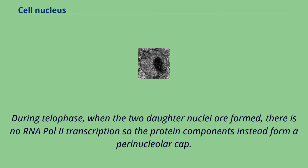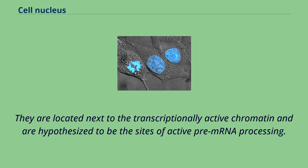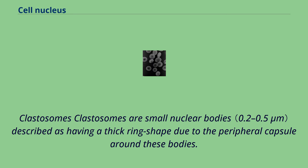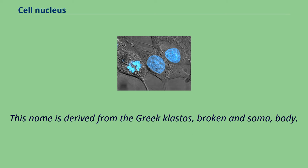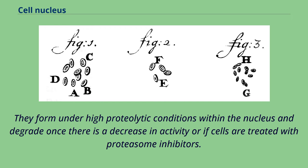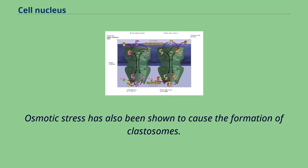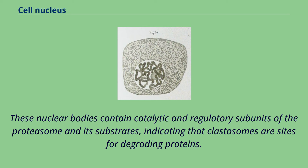Perichromatin fibrils are visible only under the electron microscope and are located next to transcriptionally active chromatin, hypothesized to be the sites of active pre-mRNA processing. Clastosomes are small nuclear bodies described as having a thick ring shape due to the peripheral capsule around these bodies — the name is derived from the Greek 'klastos' (broken) and 'soma' (body). Clastosomes are not typically present in normal cells, making them hard to detect. They form under high proteolytic conditions within the nucleus and degrade once there is a decrease in activity or if cells are treated with proteasome inhibitors. These nuclear bodies contain catalytic and regulatory subunits of the proteasome and its substrates, indicating that clastosomes are sites for degrading proteins.